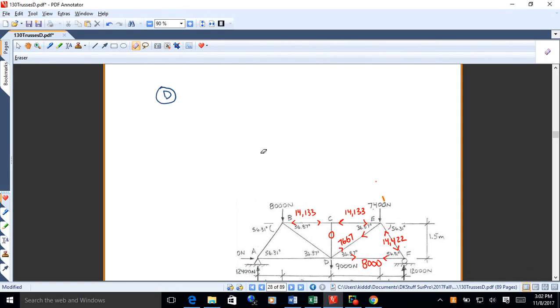So what we want to do here is figure out the forces and the members at joint D. You already got the two of them, DE and DF. CD is zero, so you need to find BD and AD.